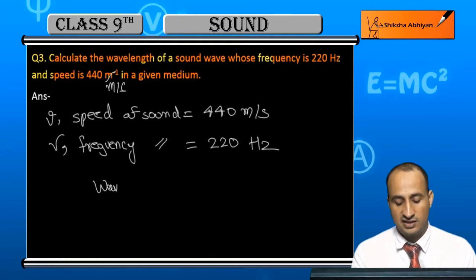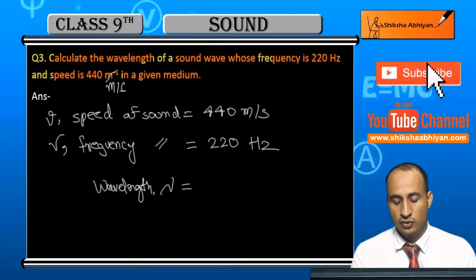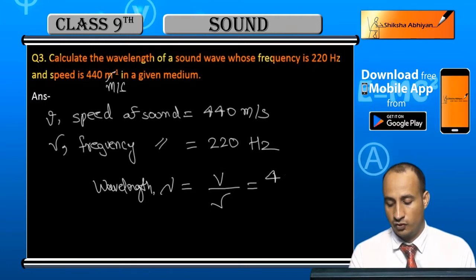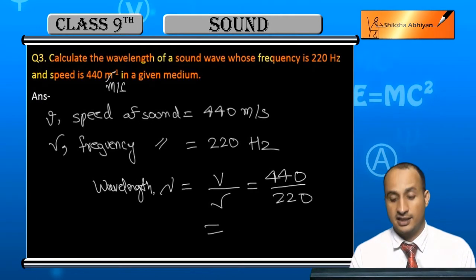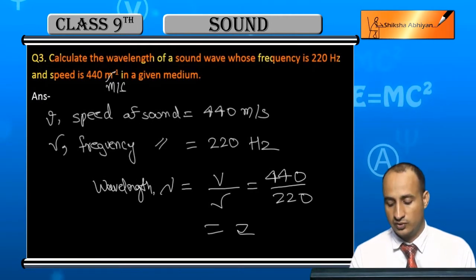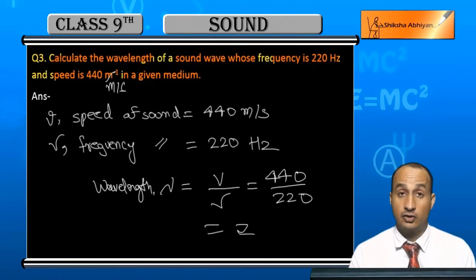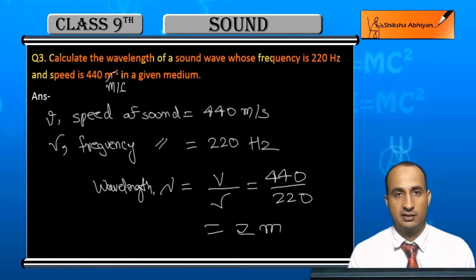So if we talk about wavelength, lambda is equal to speed divided by frequency, which is 440 divided by 220, and the answer is 2 meters.